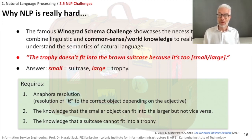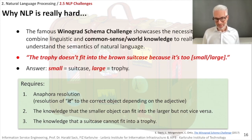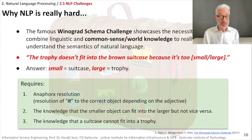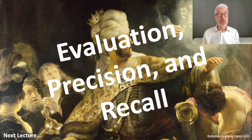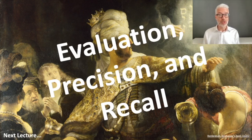But what does 'doing quite well' mean? We have to quantify the output of an experiment like that. In the next lecture we will talk about evaluation, precision, and recall as means to quantify the results and the outcome of an experiment.